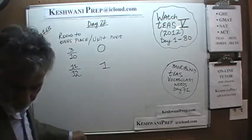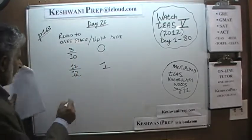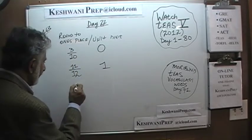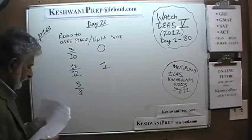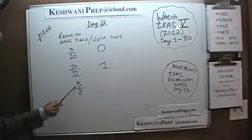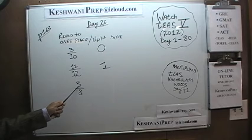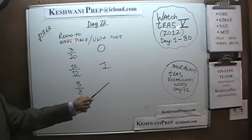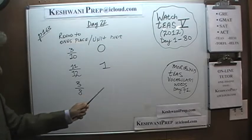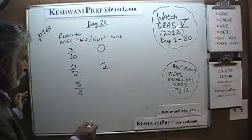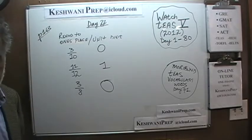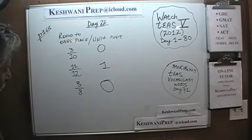How about 3 over 8? The halfway mark is 4 over 8. So if it's 4 or more, we round it higher; if it's less, we round it lower. Since 3 over 8 is less than the halfway mark, it becomes 0 when rounded to the nearest one's.